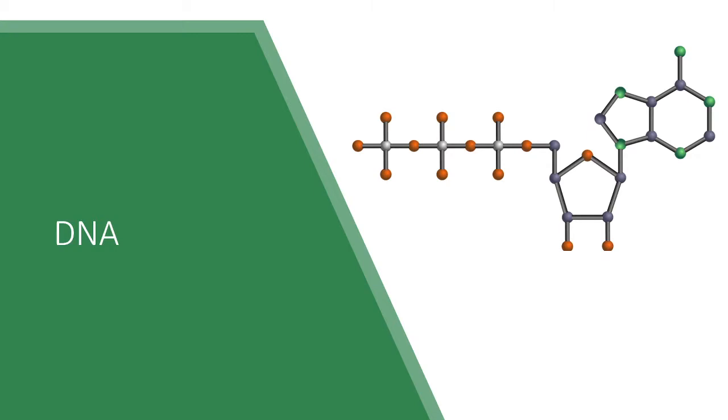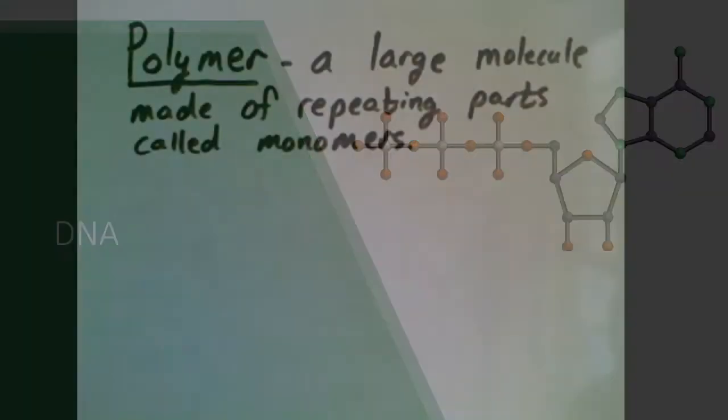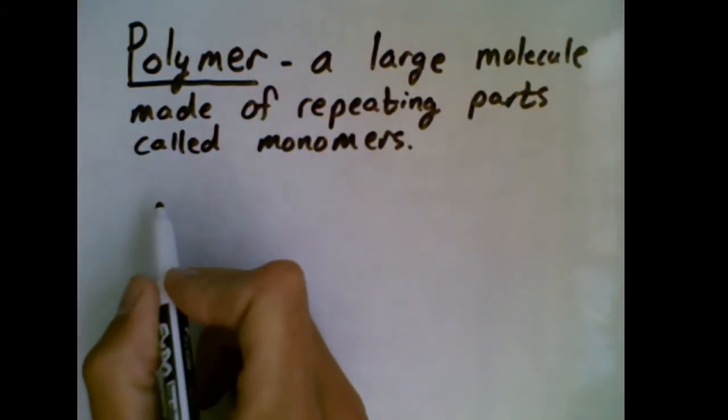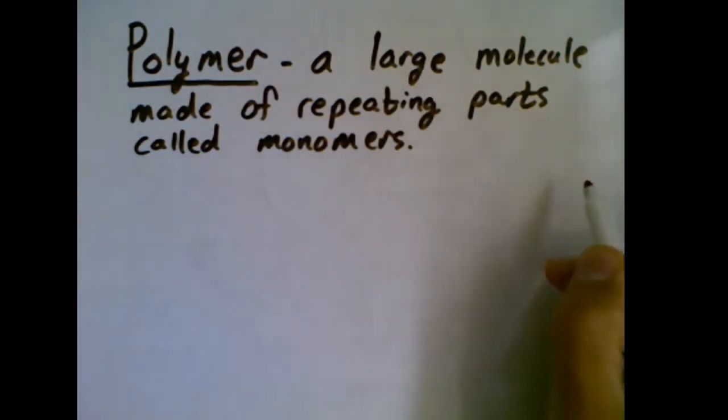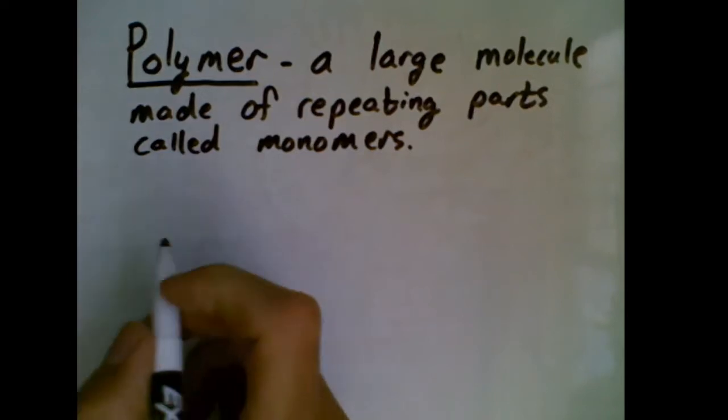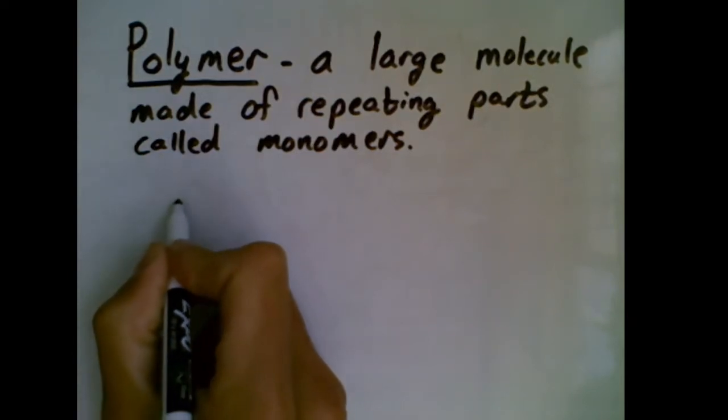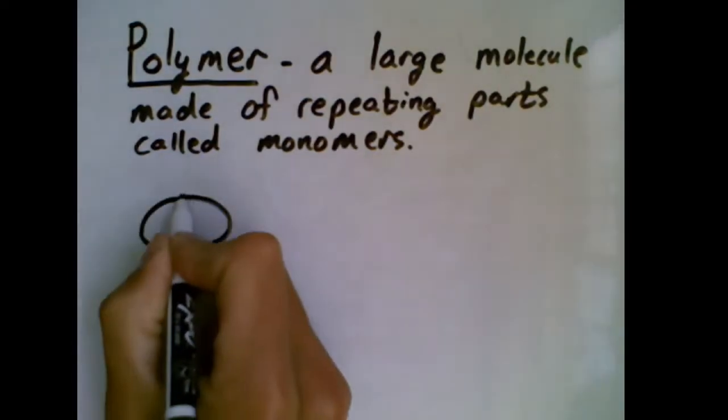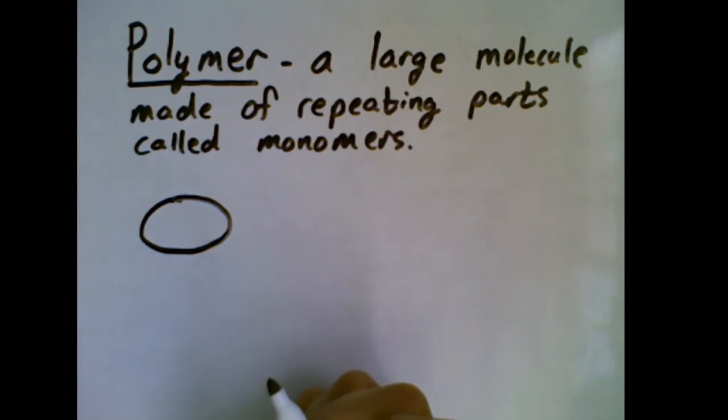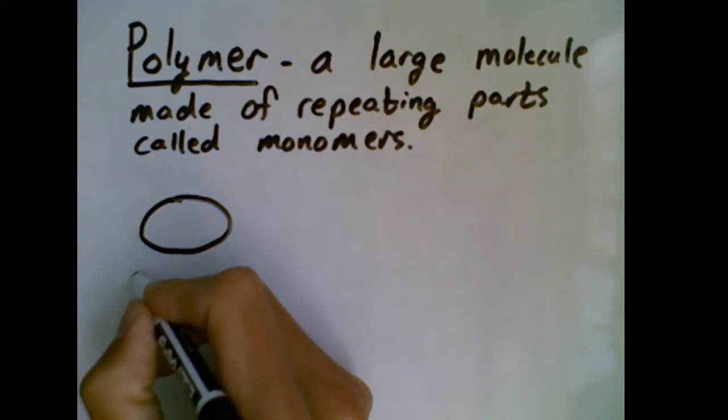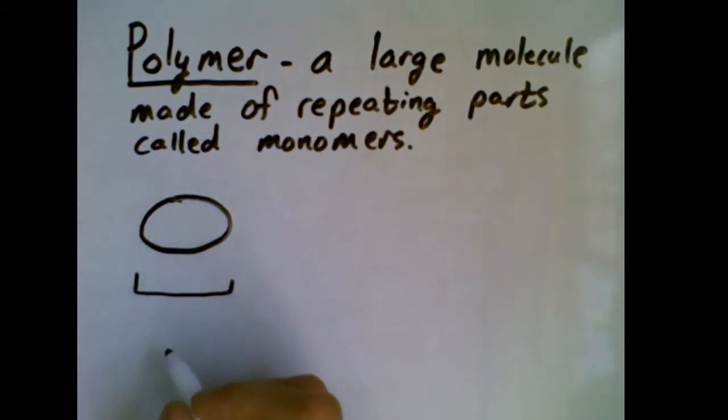Those nucleotides connected together over and over and over again to make a long chain. We talked about how you can kind of visualize a chain as a polymer. You have one individual link in that chain which would be like the monomer.